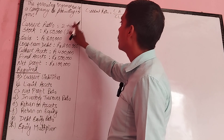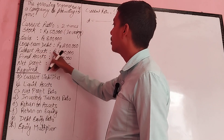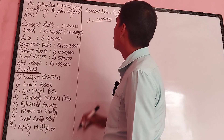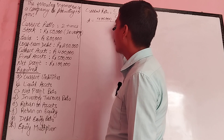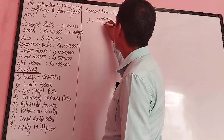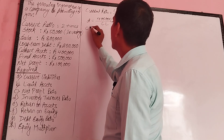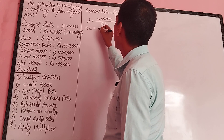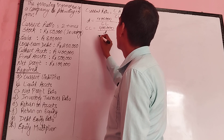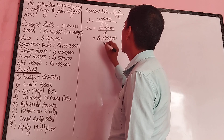Current assets divided by current liability equals current ratio. Current ratio is two times. Current assets are 4 lakh rupees. So current liability equals 4 lakh divided by 2, which gives us 2 lakh rupees current liability.